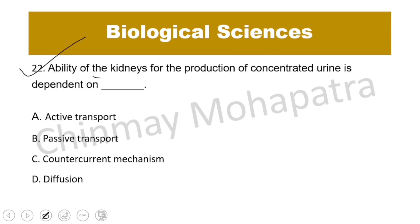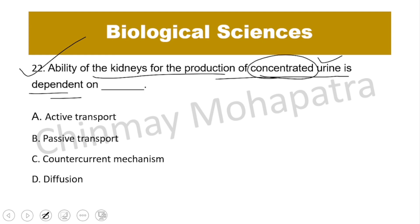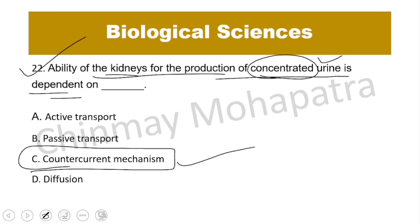Question number 22: The ability of the kidney to produce concentrated urine is dependent on the counter-current mechanism. The loop of Henle and blood supply are key components of this counter-current mechanism.